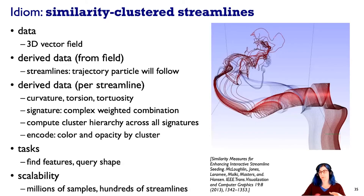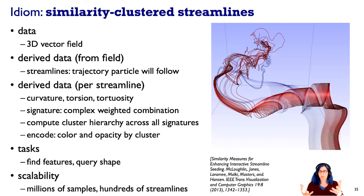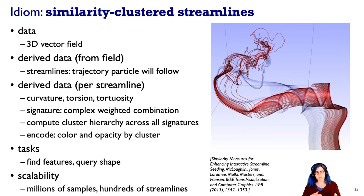What if instead of thinking about this flow in the 2D plane, we're thinking about it within a 3D volume? Things get complicated — if we tried to show everything in that 3D volume, it would be hopelessly cluttered. When dealing with three-dimensional vector fields, we typically need to aggressively cut down the amount of data we show. Here's an example using streamlines — the same idea of computing the trajectory a particle will follow. We go from the 3D vector field to some number of seed particles, compute those trajectories, and then derive more data: for each streamline, we measure its squiggliness — specific properties like curvature, torsion, and tortuosity — and combine those into a signature, a weighted combination of these different measures.